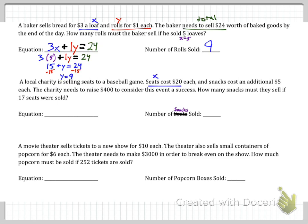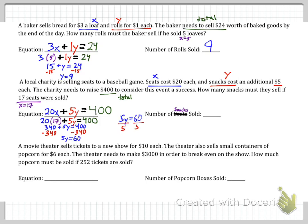A local charity selling seats to a baseball game. Seats cost 20. Snacks cost $5. We'll make seats x and snacks y. The charity needs to raise $400 total. So 20x plus 5y equals 400. How many snacks must they sell if 17 seats were sold? Well seats was x. So x equals 17. We're going to plug that in right there for x. Now we multiply them together and solve for y. When you do that you get 12. 12 snacks must be sold.